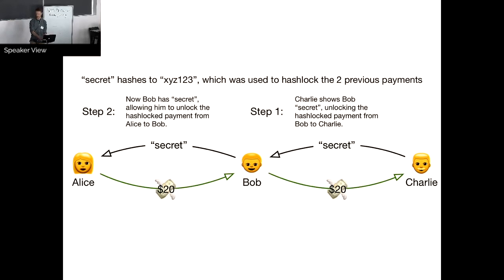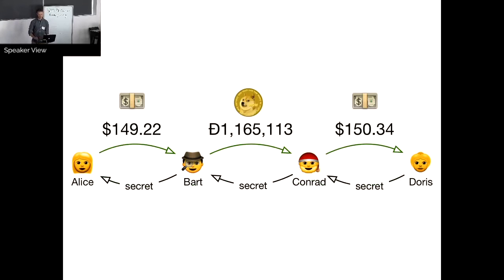Also, it doesn't really matter, just like Interledger, it doesn't really matter what the individual, what value the individual ledgers are storing as long as the money is still being released by the same hash. You can go through Bart and Conrad, who have a Dogecoin channel open on the way to giving Doris some dollars, for example.